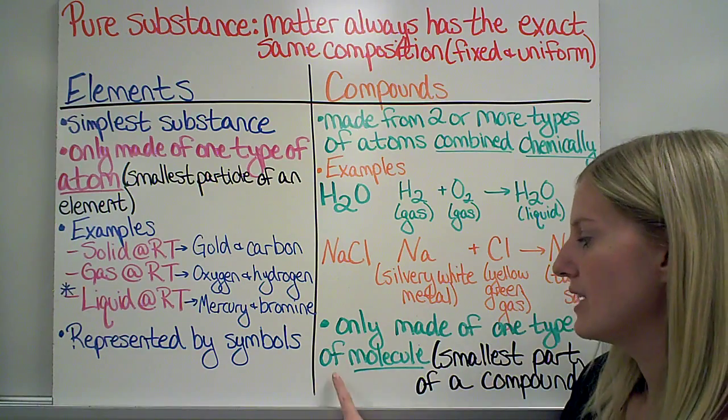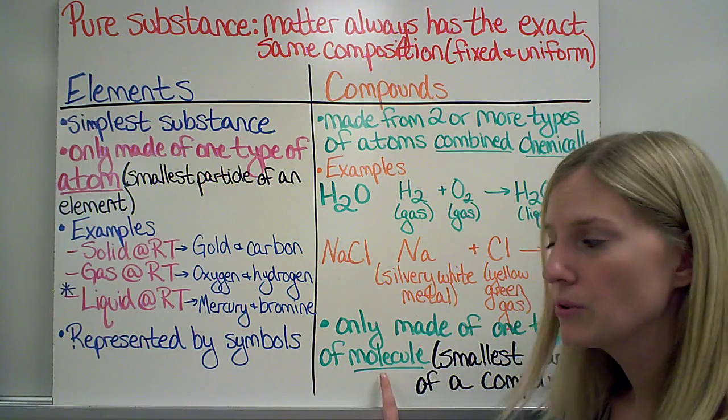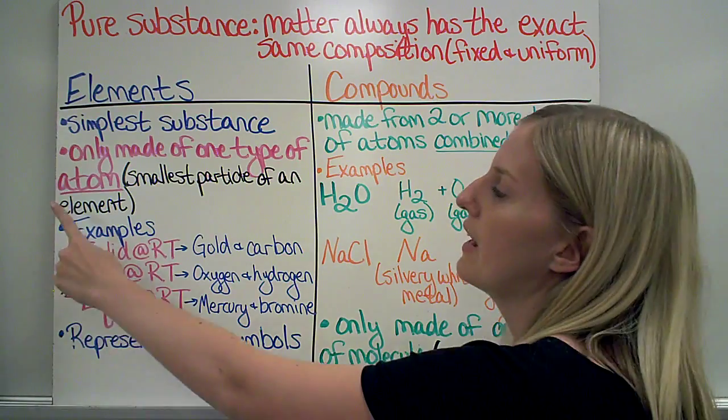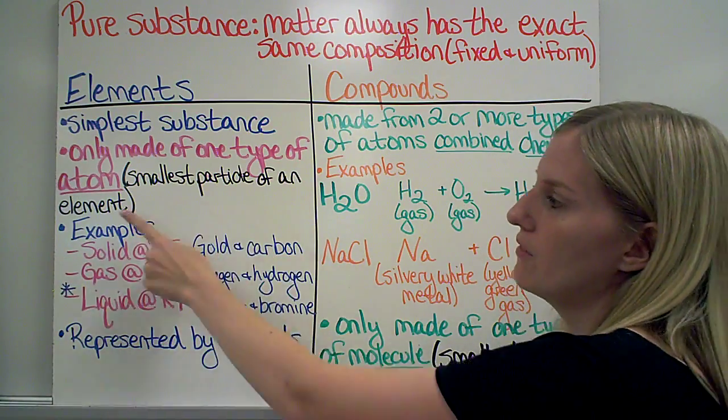These are only made of one type of molecule. So a molecule is the smallest part of a compound, while an atom was the smallest particle of an element.